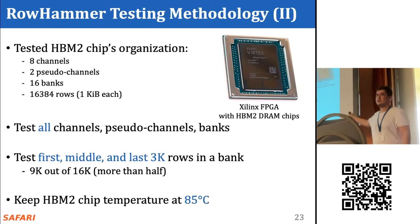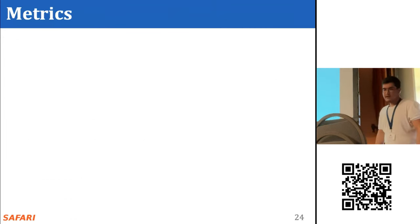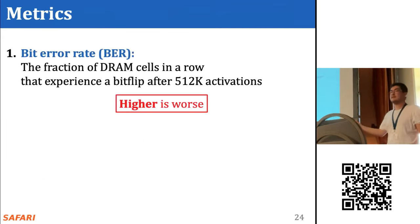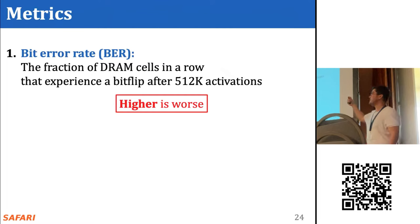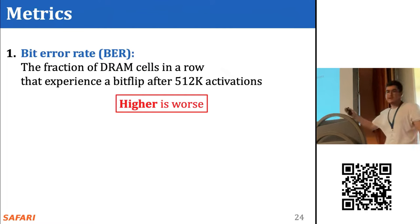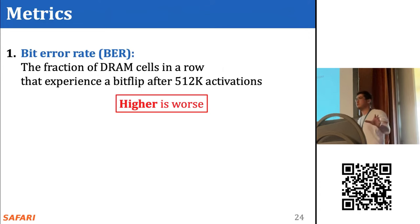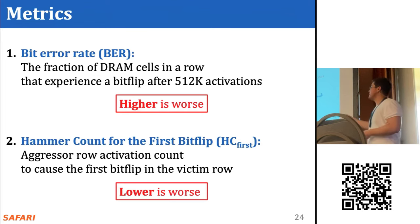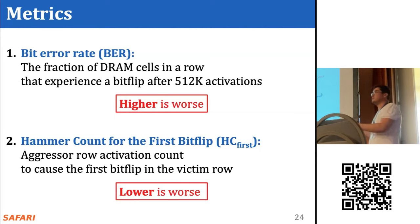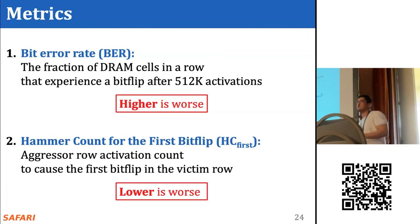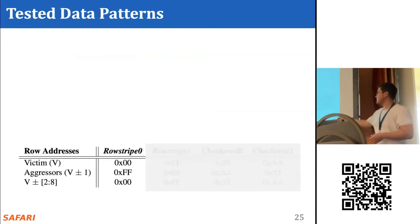We test all channels, pseudo channels, and banks, and we test the first, middle, and last 3,000 rows in each bank. The HBM2 chip temperature is kept at 85°C. We measure two metrics: the bit error rate — the fraction of cells experiencing a rowhammer bit flip, measured using a hammer count of 512,000 activations — and the hammer count for the first bit flip (HC_first), which is the number of activations required to cause the first bit flip in the victim row.